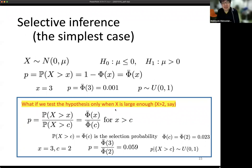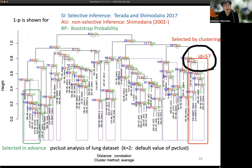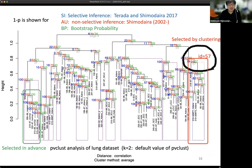This example is extremely easy and we get the answer immediately, but for more complicated problems this adjustment becomes more difficult. For example, in hierarchical clustering applied to lung cancer microarray data, we get these clusters, and we would like to compute the significance of each cluster using bootstrap resampling.